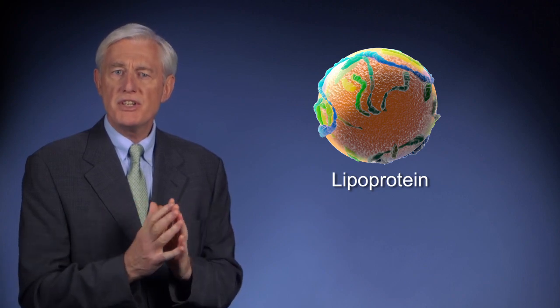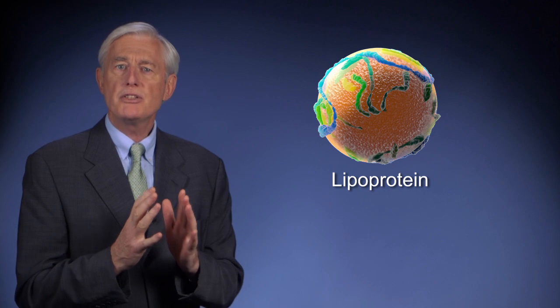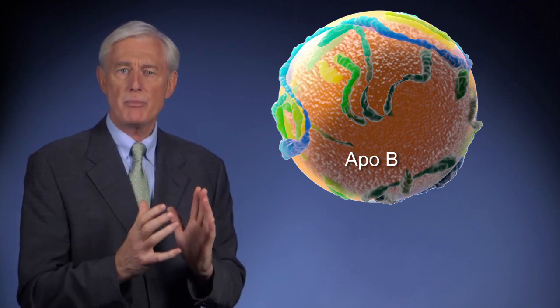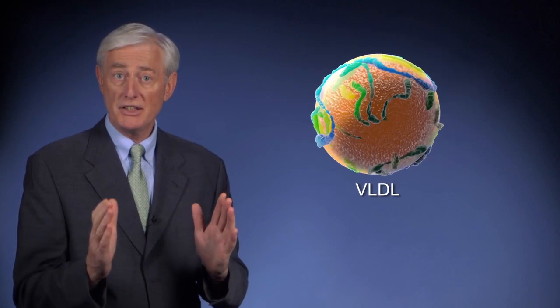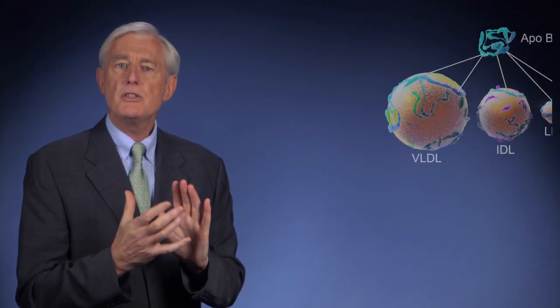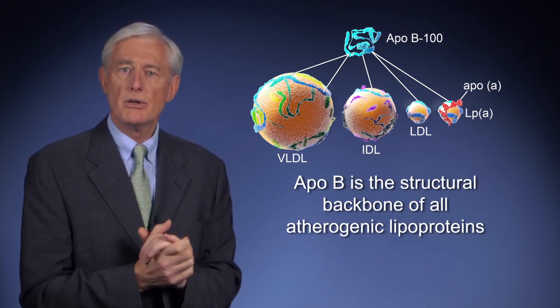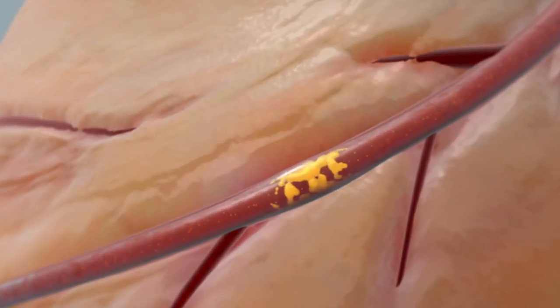Atherosclerosis results from the deposition of cholesterol in the walls of arteries by particles known as lipoproteins. ApoB, of hepatic origin, provides the structural backbone of all atherogenic lipoproteins, which include VLDL, IDL, LDL, and lipoprotein little a. This is why ApoB concentration provides a direct measure of the number of atherogenic lipoproteins in the plasma.